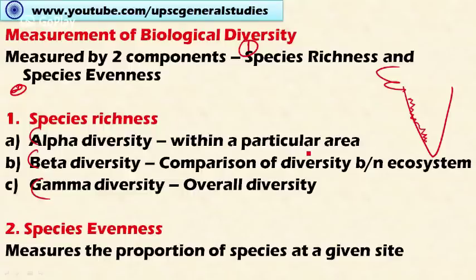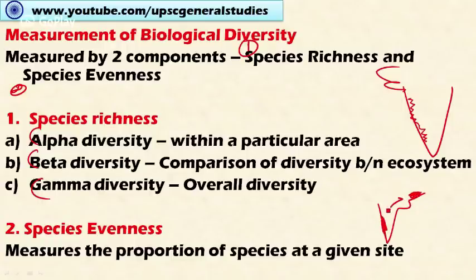Beta diversity is a comparison of diversity between ecosystems — measuring the change in the amount of species between different ecosystems. For example, comparing the diversity in the Eastern Ghats versus the Western Ghats of India and comparing the diversity between these two is the beta diversity. So beta diversity is essentially a comparison between different regions or ecosystems.